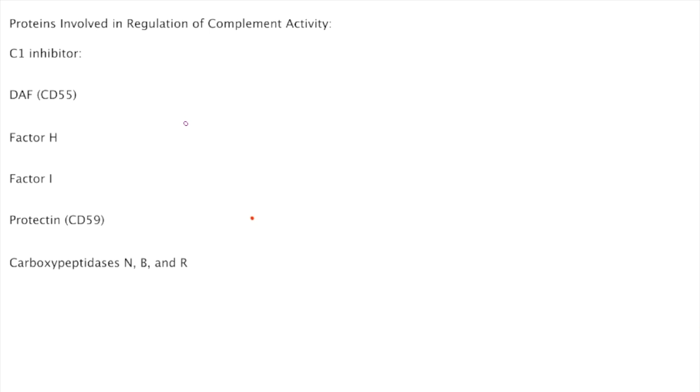The first one is C1 inhibitor. It is involved in fluid phase regulation. It affects the classical and lectin pathways. Remember, C1 inhibitor is involved right at the beginning of the classical pathway.